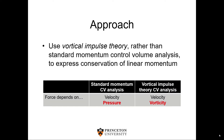Theoretically, the approach I've taken is to use vortical impulse theory, which is an alternative to the standard momentum control volume analysis. It's simply an equivalent but different expression of the conservation of linear momentum. The key difference is that the standard approach involves velocity and pressure to express the force, whereas the vortical impulse method requires information about velocity and vorticity. This is useful because it's easier to make physical arguments about what the vorticity field is doing than to argue about what the pressure field is doing directly behind the blades.